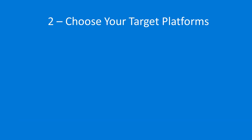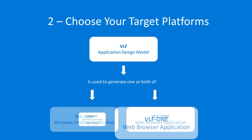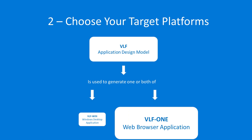The second step is to choose your target deployment platforms. In VLF terms, the Windows target platform is called VLF Win and the web browser target platform is called VLF One. The web browser's zero deployment and multi-device advantages mean that the focus of the remainder of this video will be on creating web browser based applications. So if you see or hear VLF One in this presentation, that's what's being referred to.